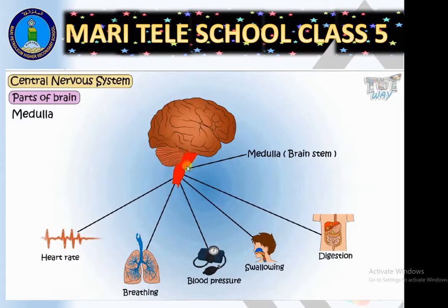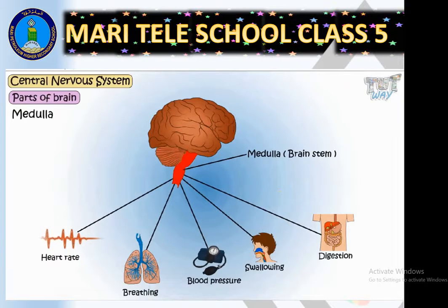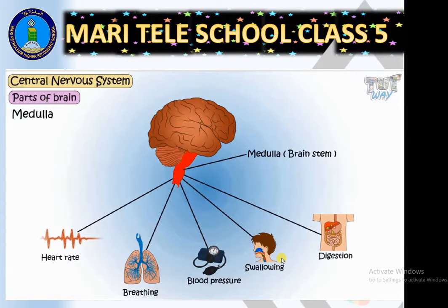The medulla controls all involuntary actions which automatically go on without our conscious control — like the heartbeat, breathing, circulation of blood, blood pressure, swallowing when we eat, digestion, vomiting, sweating, and many other activities. So these are the three parts of the brain: cerebrum, cerebellum, and medulla or brain stem.